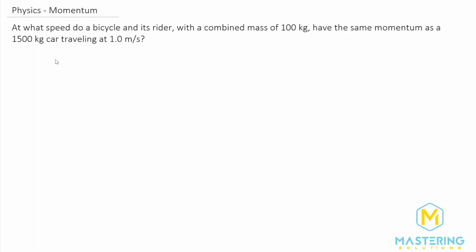First off, let's go through and write down a list of the variables that we have. So we have a bike with a rider, and then we also have the momentum of a car. So if we go through for the bike, they have a combined mass, m sub b, of 100 kilograms.